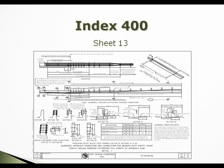Going back to the design standards changes, starting with index 400. Index 400, sheet 13: there was an issue with notes on how to attach and how to pay for anchoring to existing and proposed bridges. When we released the fiscal year 2012-2013 design standards, we had made some changes, but we've since gone back and reviewed several notes. As you can see in the highlighted area, part of the note from fiscal year 2012-2013 to 2013 was removed.